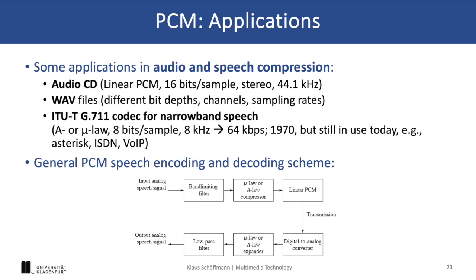PCM is extensively used in digital audio systems and there are a few very well-known examples like the audio CD format and WAV files which utilize linear PCM, typically with 16 bits per sample, stereo channels and a sampling rate of 44.1 kHz, which is also the standard for audio CD quality.